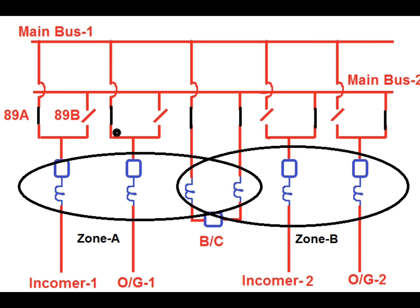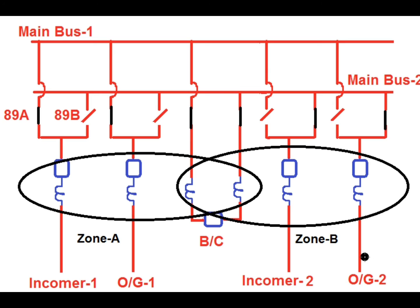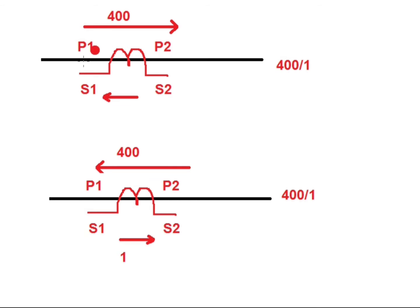Similarly, if outgoing feeder 1 is connected towards main bus 1 via 89A, then this outgoing feeder is also considered in zone A. The bus coupler CT connected towards main bus 2 will be counted in zone A, and the bus coupler CT connected towards main bus 1 will be considered in zone B. Incomer 2 is connected to main bus 2 via 89B, so incomer 2 is considered under zone B, and outgoing feeder 2 connected to main bus 2 via 89B is also considered under zone B.